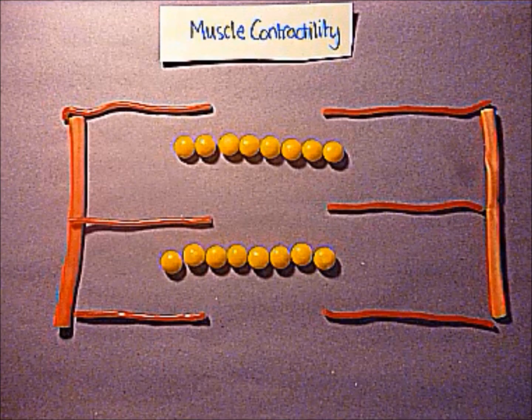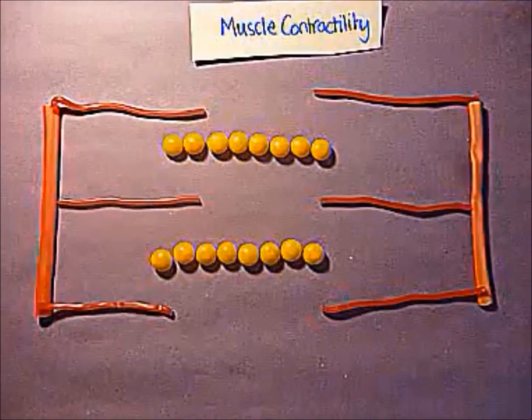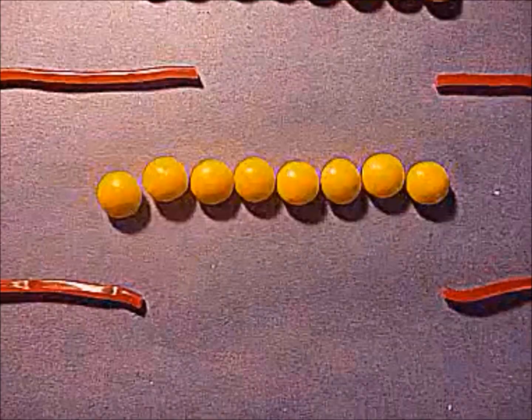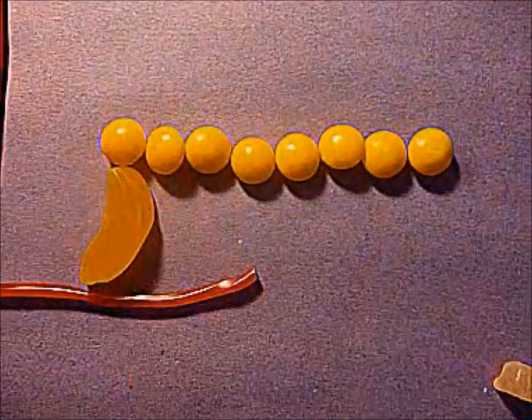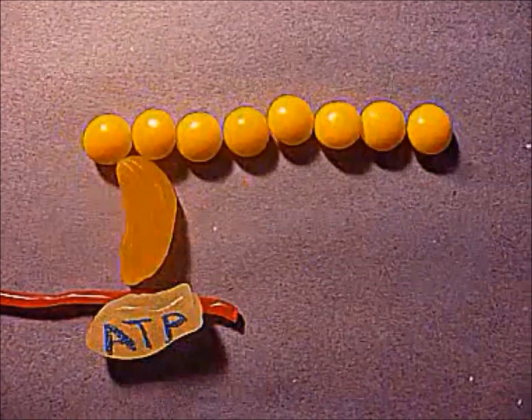Actin and myosin interactions cause the sarcomeres to contract. The myosin head binds to the actin filament, forming a crossbridge. ATP hydrolysis provides the energy for the power stroke.